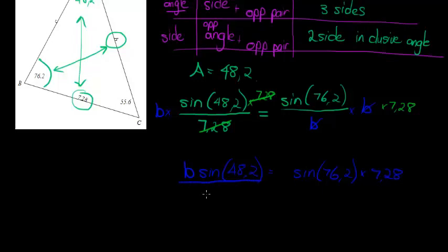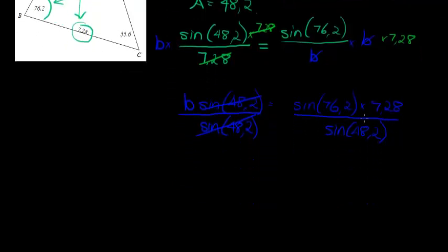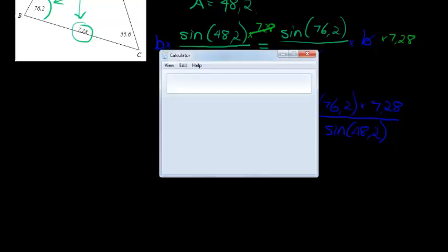And then we see, to get B on its own, we just now have to divide both sides with sine of 48.2. This side cancels, so I've got B on its own and on the right hand side now I've got an expression. If I simplify that expression, I should get the side length of B.